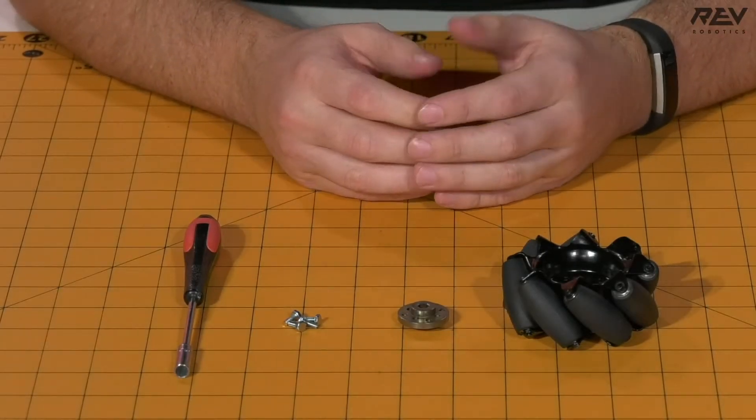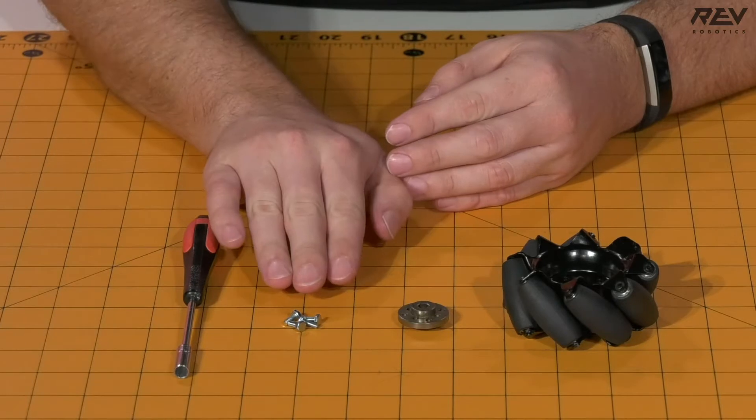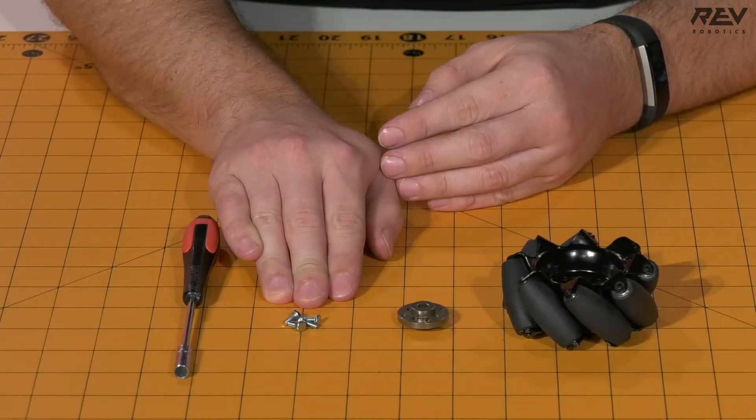We are building the Mecanum wheel assembly. For this assembly you're going to need a 5.5mm nut driver, four M3 hex cap screws that are 8mm long,